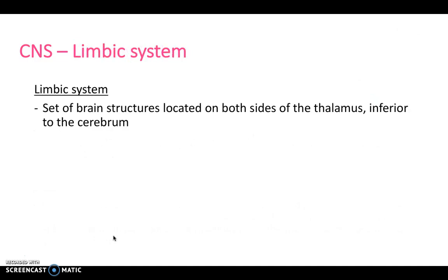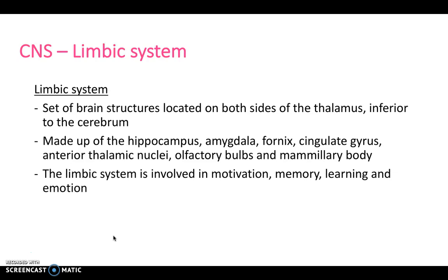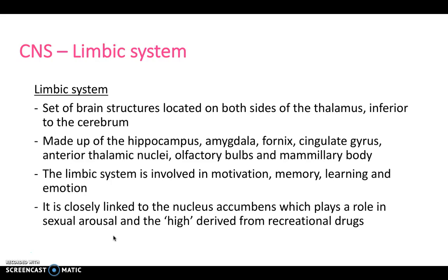The limbic system is a set of brain structures on both sides of the thalamus, inferior to the cerebrum. It's made up of the hippocampus, the amygdala, the fornix, the cingulate gyrus, the anterior thalamic nuclei, the olfactory bulbs, and the mammillary body. The limbic system is involved in our motivation, memory, learning, and emotion. It's closely linked to the nucleus accumbens, which plays a role in sexual arousal and the high derived from recreational drugs.